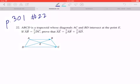ABCD is a trapezoid whose diagonals AC and BD intersect at the point E. If vector AB equals 2/3 times vector DC, prove that vector AE equals 3/5 times vector AB plus 2/5 times vector AD.